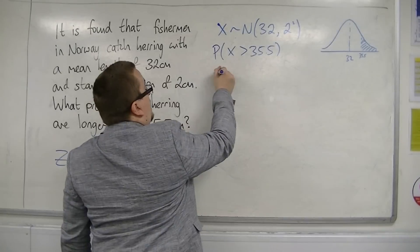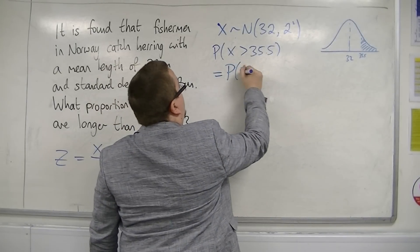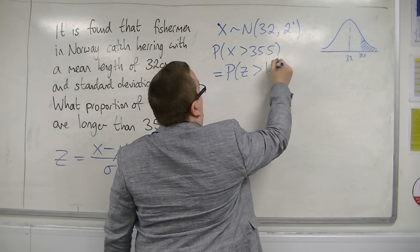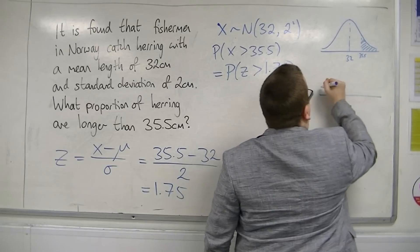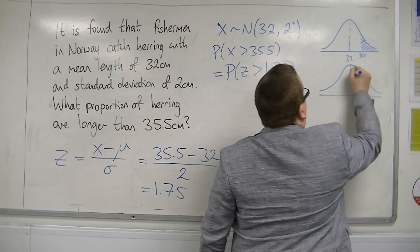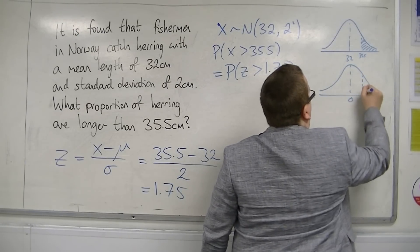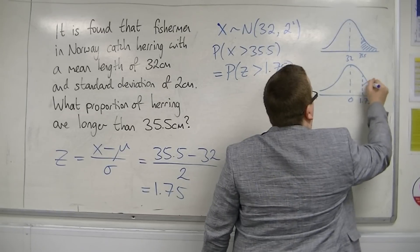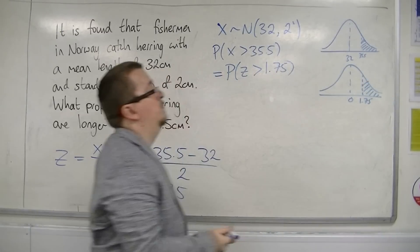And so this is going to be equal to the probability of z being greater than 1.75. So our standardized normal, we're looking at that probability there.